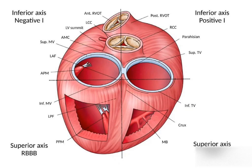Based on all this information, we can identify the different anatomical spots in the heart where the VT origin takes place. To summarize: first assess the transition zone, then determine the axis — superior or inferior — and then apply the other criteria mentioned, such as bundle branch morphology and lead 1 polarity.